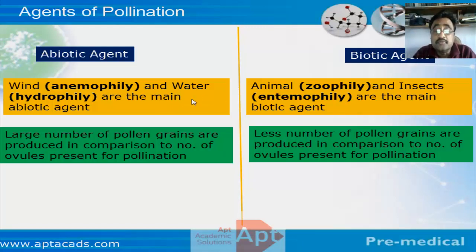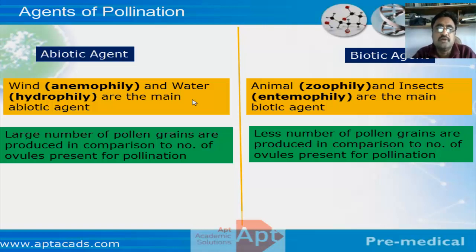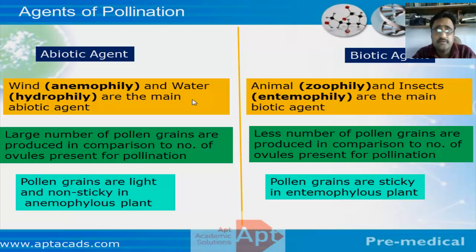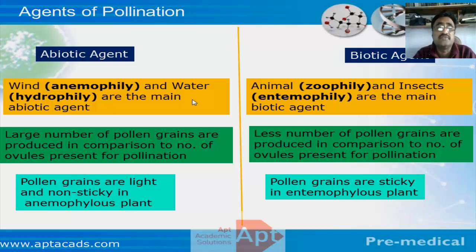Comparing abiotic and biotic agents in terms of pollen production: for abiotic agents, a very large number of pollen grains must be produced to ensure pollination, since the wind carries grains randomly. For biotic agents, relatively fewer pollen grains are needed because the animal itself visits flower to flower. Also, pollen grains of abiotic-pollinated plants are light and non-sticky so they can be carried by wind, whereas in biotic-pollinated plants the pollen must be sticky so it adheres to the insect.